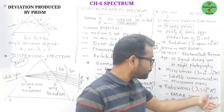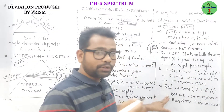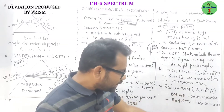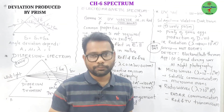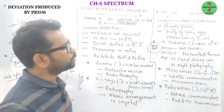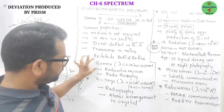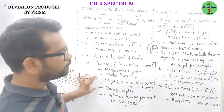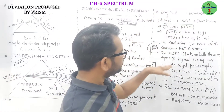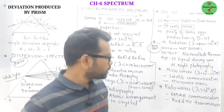Radio waves have a wavelength range greater than 10¹⁰ angstroms. They are used in radar communication, radio, and television communication. From an examination point of view, applications are important. Try to remember the wavelength ranges, and especially the applications of UV radiations and infrared radiations — these are very, very important for exams.